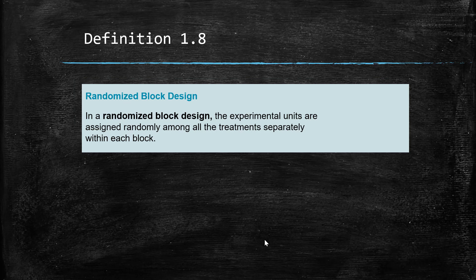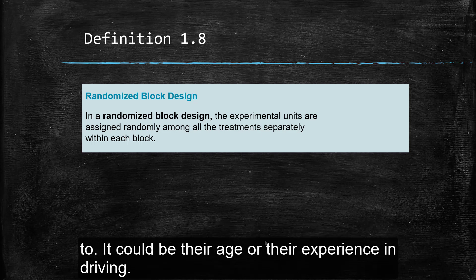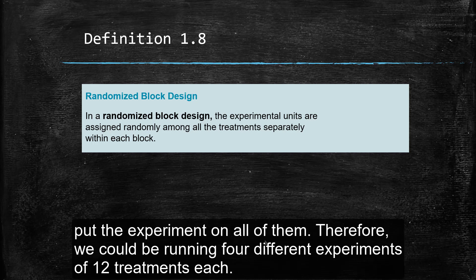A randomized block design, though, is where we randomly put them into different blocks. So the treatments are separated within each block. So think of the drivers could be a lurking variable. A lurking variable is something that could happen that we're not paying attention to. It could be just their age or their experience in driving. So with the drivers, we could split them up first into how long they've been driving and then put the experiment on them. So we could be running four different experiments of 12 treatments each.